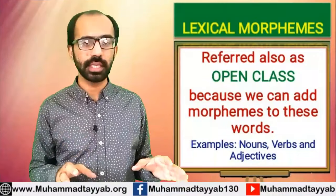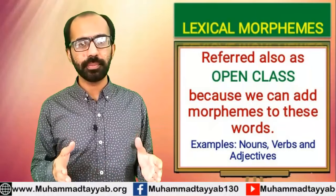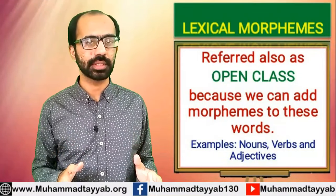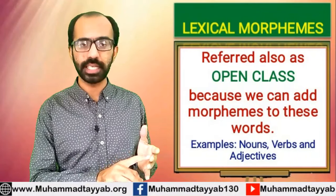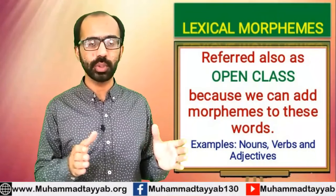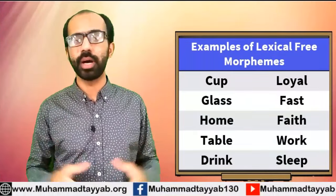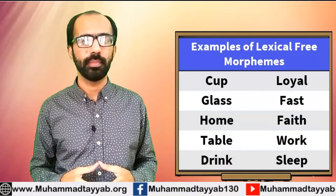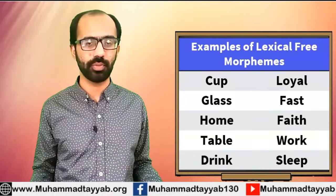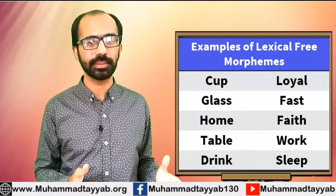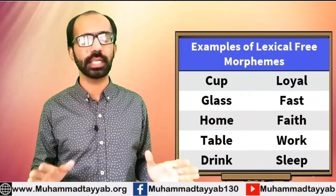Free morpheme has two types. One of them is lexical morpheme — we also call this category open class words. These are main words, lexical items. It includes nouns, verbs, and adjectives. For example, nouns like car, home, cup, glass, and table are free morphemes and lexical morphemes because they are lexical items that can communicate their meaning irrespective of any other morpheme.